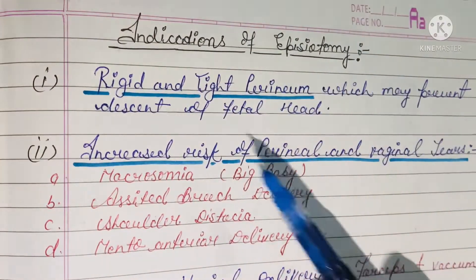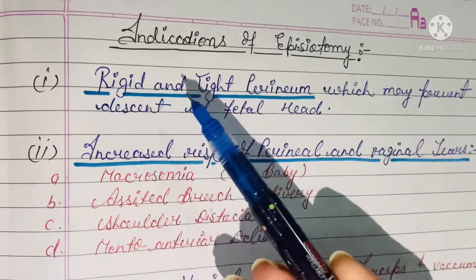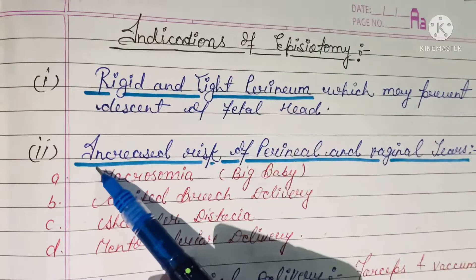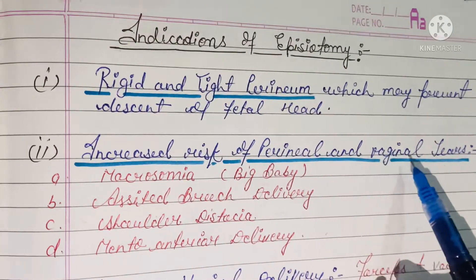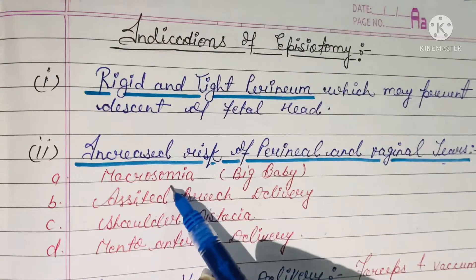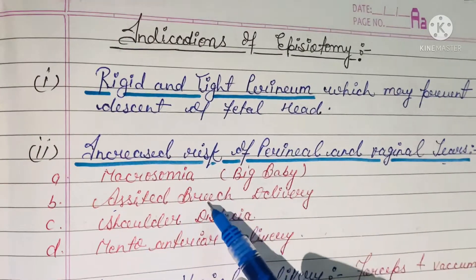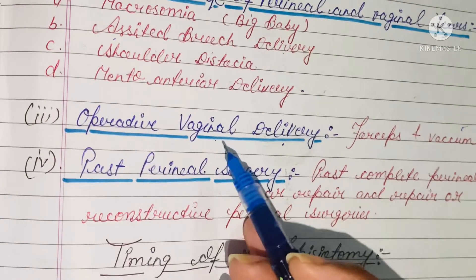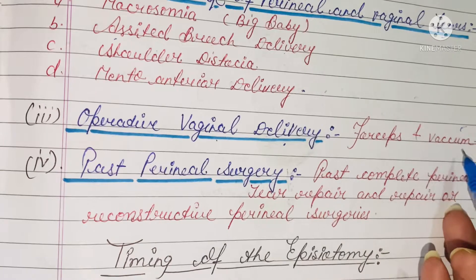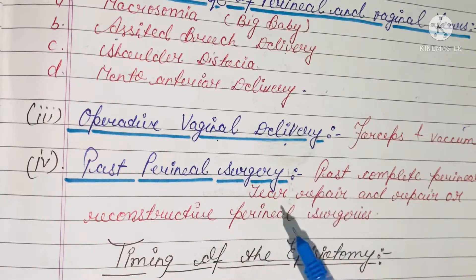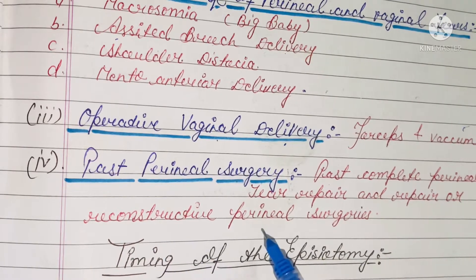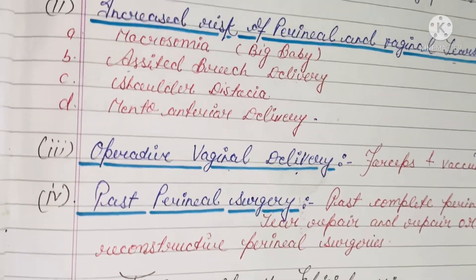Moving to the indications of episiotomy: rigid and tight perineum, which may prevent descent of the fetal head; increased risk of perineal and vaginal tears; macrosomia if the size of the baby is very large; assisted breech delivery; shoulder dystocia; mento-anterior delivery; operative vaginal delivery whether by forceps or vacuum; past perineal surgery; and past complete perineal tear repair or reconstructive perineal surgery.